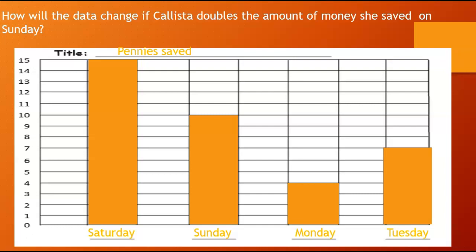Next question: How will the data change if Calissa doubles the amount of money she saved on Sunday? You need to think about what doubling means. How much did she save on Sunday? She saved 10. If we go to our graph we look right here — Sunday, 10. And if we double it, what does that mean? It means we're going to add that number again to itself. So 10 plus 10 equals 20. Is that what you got? Good job.